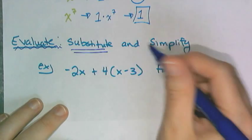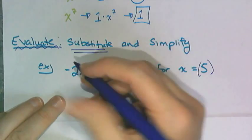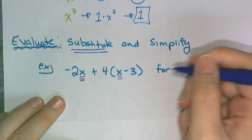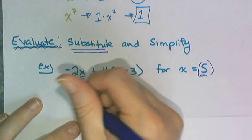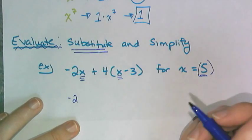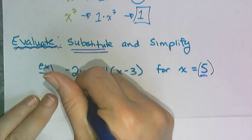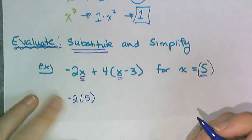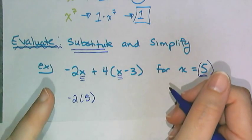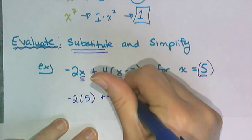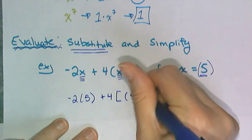So for this one, if I want to substitute in and simplify, that means wherever I see X, I'm going to replace it with five. So the math that I'm going to do is I'm going to take two, and I have to remember that when I see a number next to a variable, it means multiplication. So I just put down a five in parentheses, and then plus four times, I'm going to put some brackets there, five minus three.